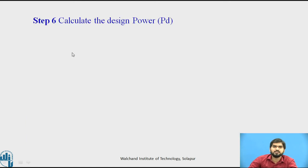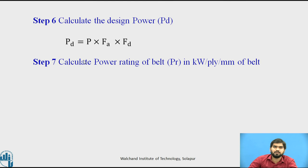Step number 6: calculate the design power. We calculate design power as pd = p × FA × fd, where p is the actual load. Step number 7: calculate the power rating of the belt, pr, in kW per mm of belt width.